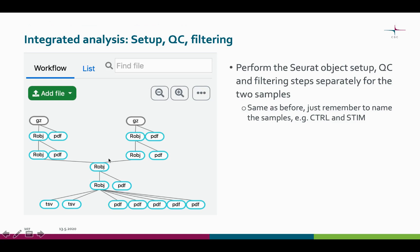Here you can see the pipeline in Chipster. Here are the two samples. As you can see, the first steps are performed for both samples. The only thing we need to remember to do in the very first step is naming of the samples, so that they can be distinguished later on. For plotting purposes, we use these short names in capital letters.